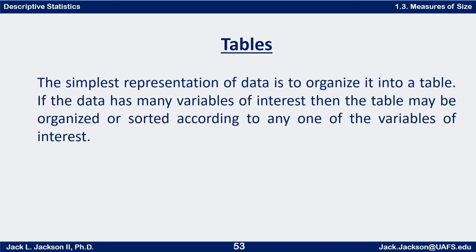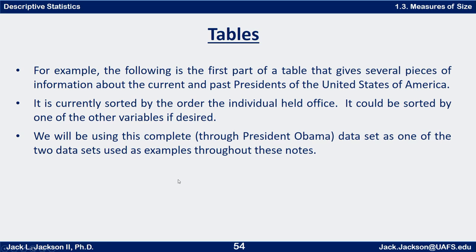One of the simplest ways to represent data in an organized way is to organize it into a table. If the table has many variables of interest, then the table may be organized or sorted according to any one of those variables. I'm getting ready to show you a piece of a table that gives several pieces of information about the current and past Presidents of the United States through President Obama. It is currently stored by the order that the individual held the office, but it could also be sorted by any of the other variables if desired.